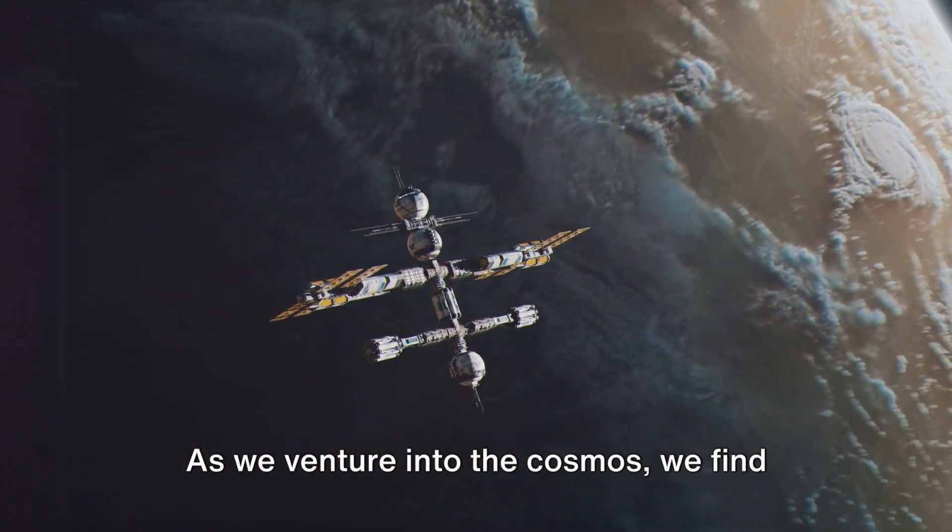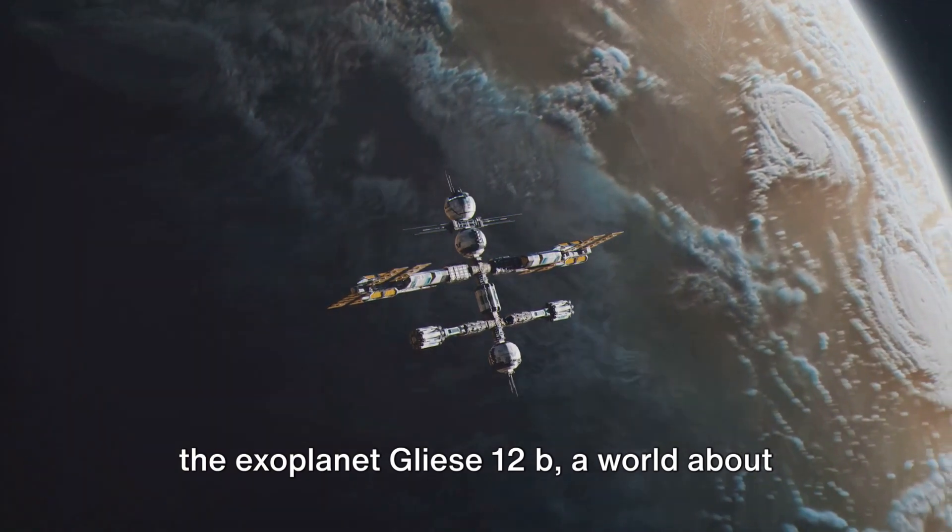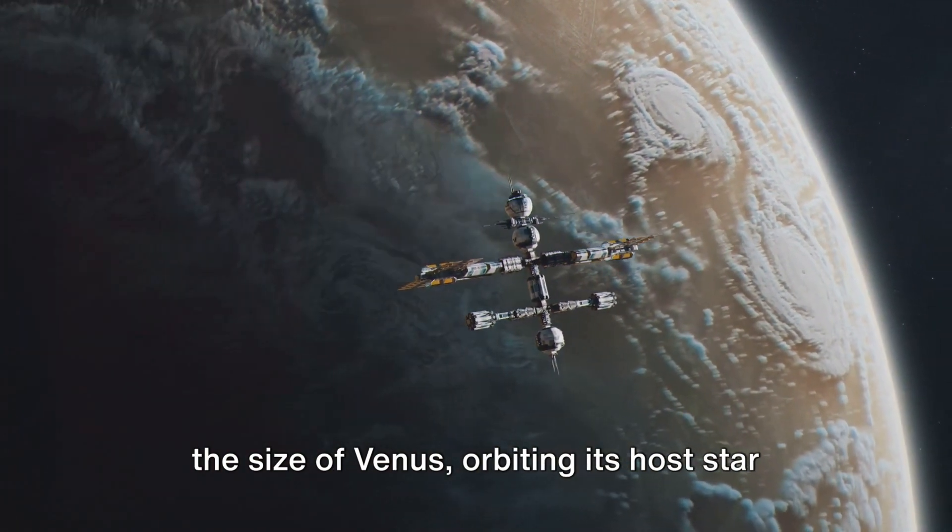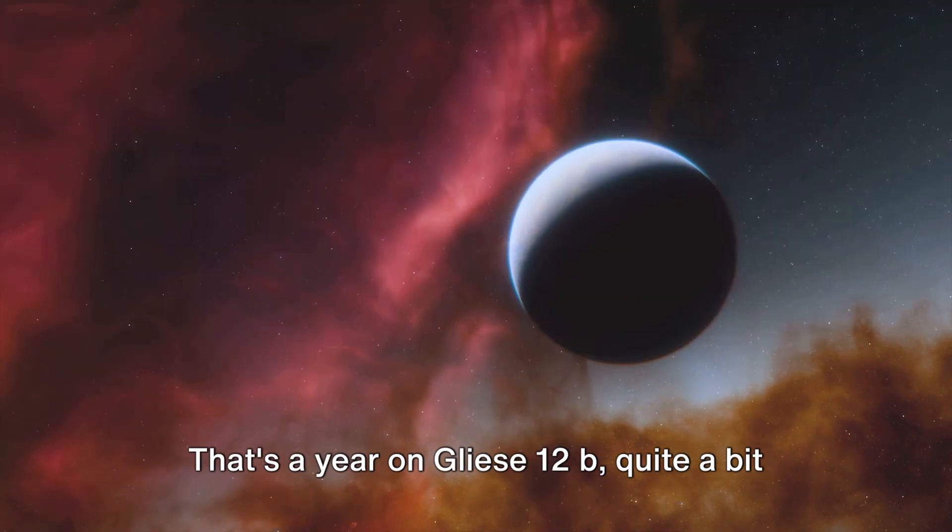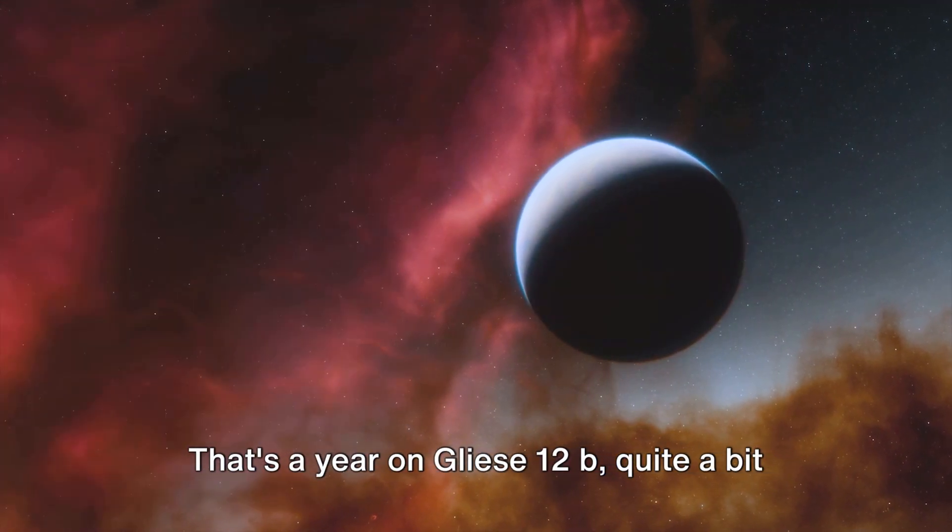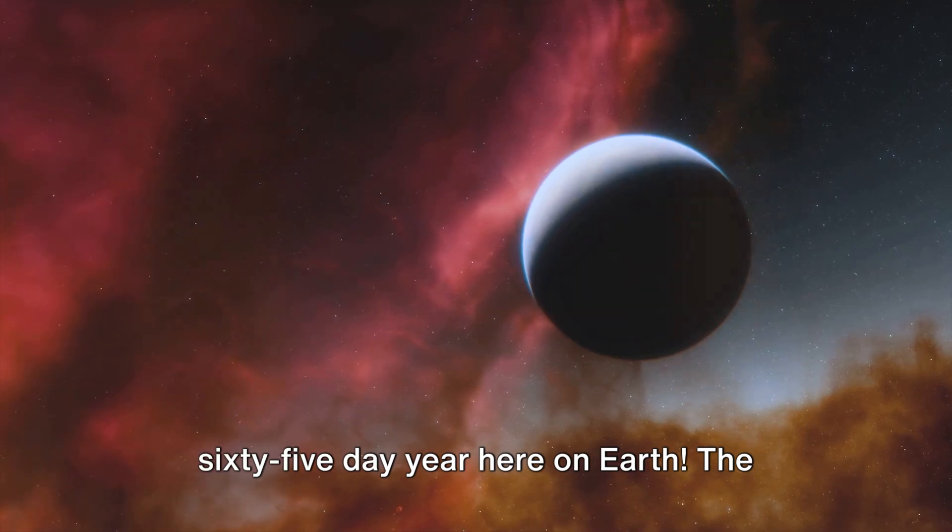As we venture into the cosmos, we find the exoplanet Gliese 12b, a world about the size of Venus, orbiting its host star every 12.8 days. That's a year on Gliese 12b, quite a bit shorter than our 365-day year here on Earth.